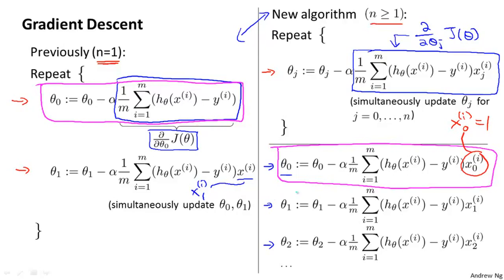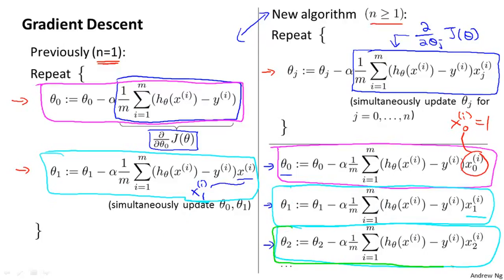Similarly, if you look at the update rule for theta 1, you find that this term here is equivalent to the term we previously had, the update rule we previously had for theta 1, where we're just using this new notation, x subscript 1, to denote our new notation for denoting the first feature. And now that we have more than one feature, we can have similar update rules for the other parameters like theta 2, and so on.